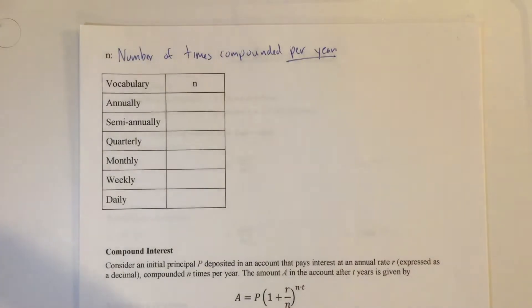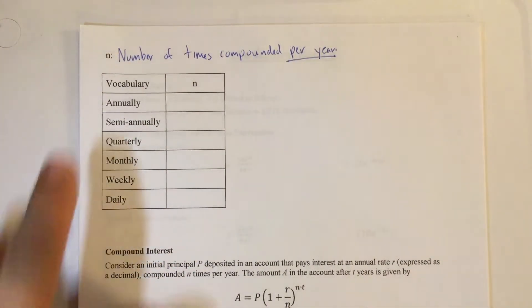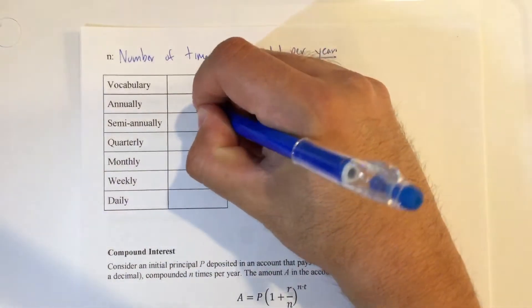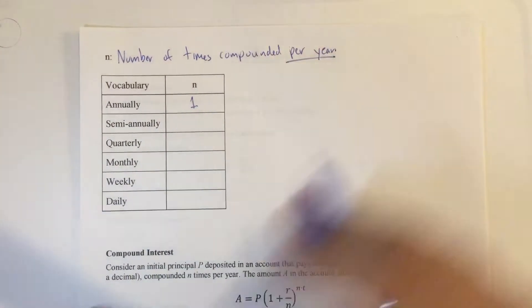Key word per year. So every word I read you happens how many times in a year? Annually takes place once a year. Semi-annually means twice.